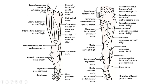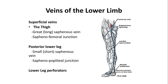By checking these cutaneous nerves we can confirm which part is deficient, damaged, or not functioning. We can determine the segment of the spinal cord involved by checking these cutaneous nerve distributions.